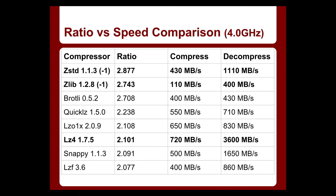Quickly comparing ZStandard to ZLib, which is GZIP, and LZ4: instead of about a 2 to 1 compression ratio, you can get closer to 3 to 1. It's not as fast as LZ4, but four times faster than GZIP. These numbers are per core, so if you have a reasonable number of cores, you're going to be much faster than your spindles or maybe even your SSDs, making the trade-off for having compression pretty low.